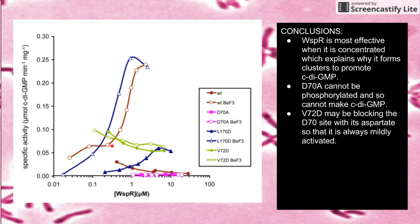My independent reasoning is that V72 was originally a valine and was changed to an aspartate, which has a highly negative functional group that can mimic a phosphate group. Being so close to the D70 phosphorylation site, this negative side group can sort of mimic phosphorylation, such that this mutant is just locked in a semi-phosphorylated state. That's my reasoning for what's going on with this mutant. The overall result is that concentration and clustering are important for making WISP-R really active.